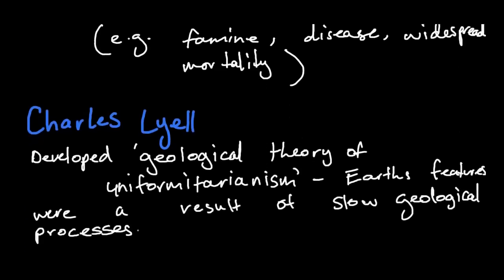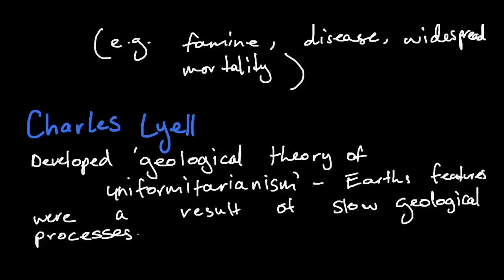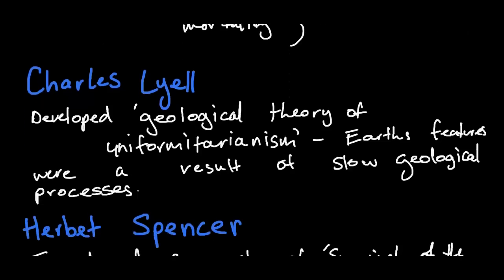Charles Lyell didn't have such a big direct role in evolution, but he developed a theory called the Geological Theory of Uniformitarianism, which stated that Earth's features were a result of slow geological processes. This led to ideas about evolution — if geology changes slowly over time, what if living things do too?